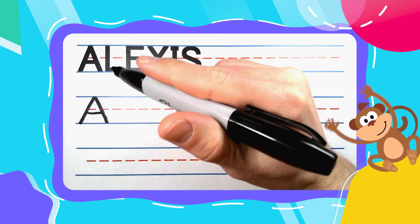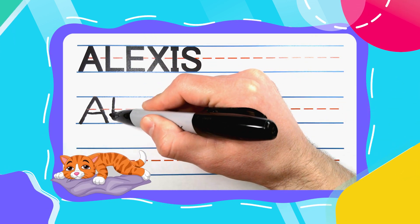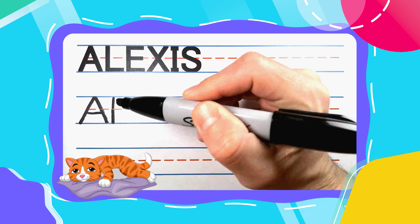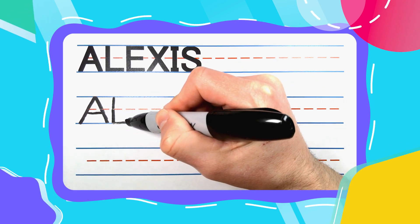The next letter in Alexis is the lazy L. Straight down to start, then kick a lovely leg out to the right to complete it.